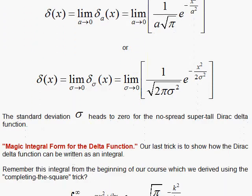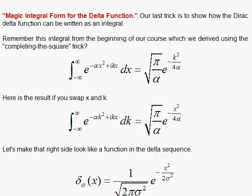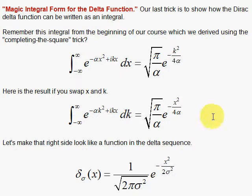What I would like to do last is give you an integral form for the Dirac delta function. So the Dirac delta function is the limit of this Gaussian as sigma goes to 0. So let's look at this function for a second. And an integral that we did earlier in our course, way back the first week, we did this integral. And I would like to use this integral to arrive at an integral form for the delta function.